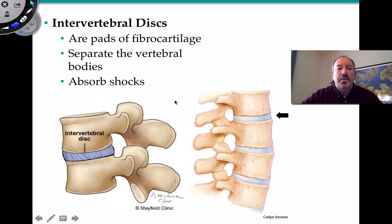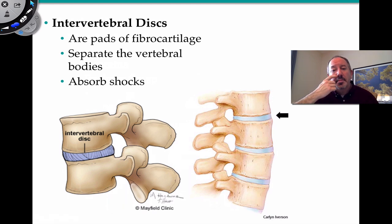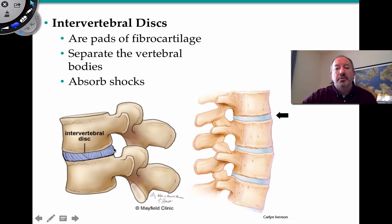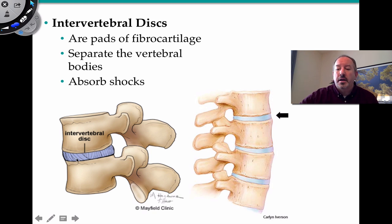The intervertebral discs function to absorb shocks, which is very important. Sometimes trauma can cause these discs to slip — they can move anteriorly or posteriorly, both of which are problematic because they can impinge on the spinal cord, causing severe pain. Treatments exist, and in some cases surgery is ultimately required. These discs are pads of fibrocartilage to help absorb shock.